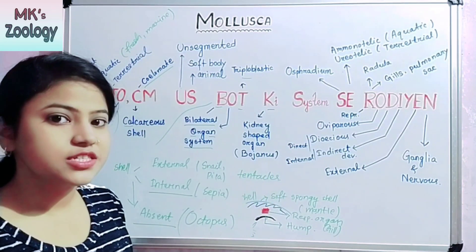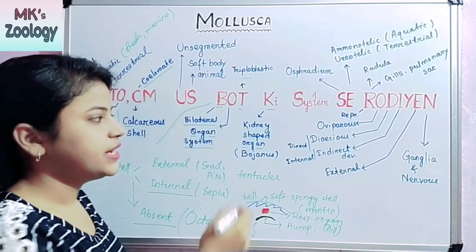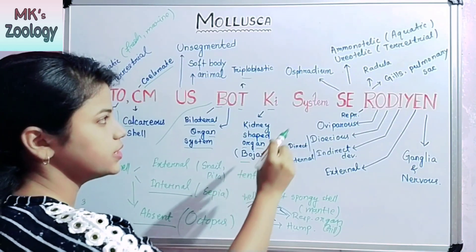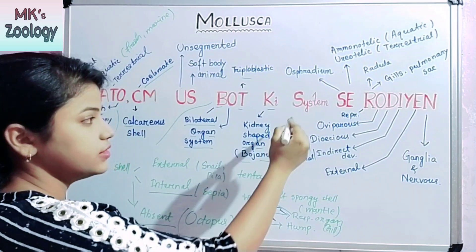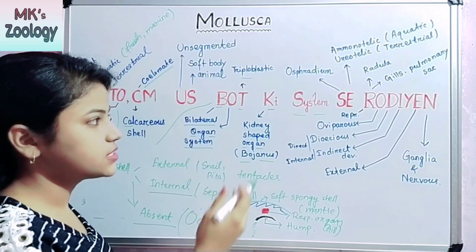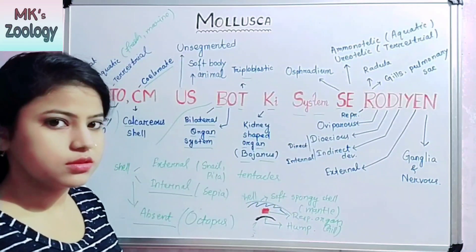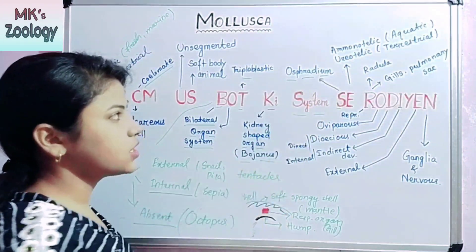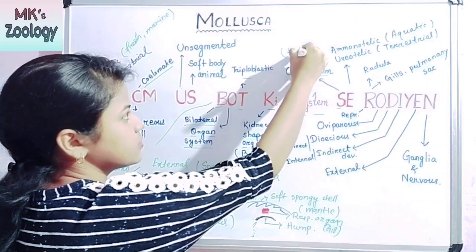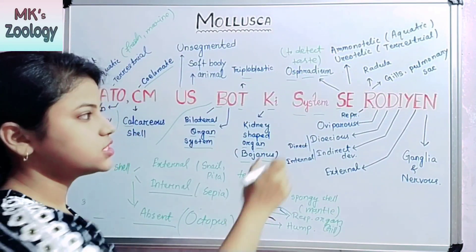Ki stands for the kidney-type organ present in Mollusca for excretion, which is known as Bojanus. The next part of the trick is 'systems.' S means sensory system, and in the sensory system there is the presence of osphradium. The work of osphradium is to detect taste.